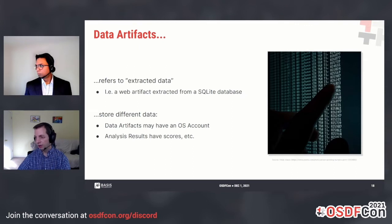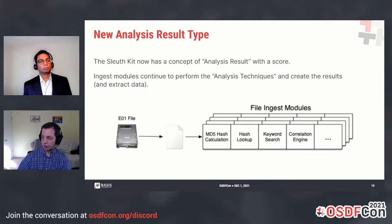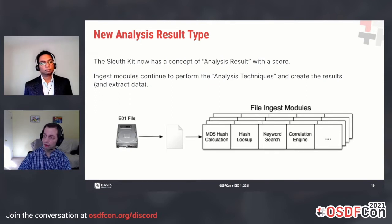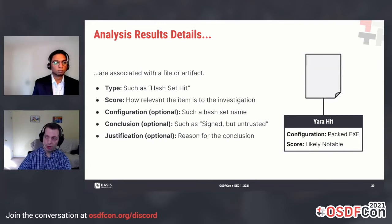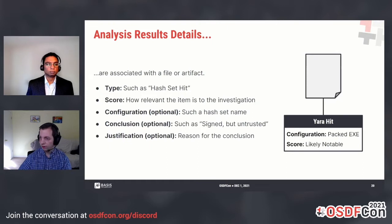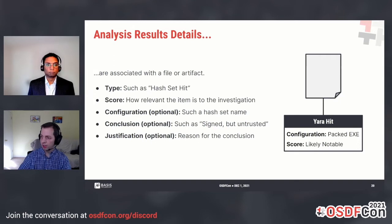Beyond the semantic differences, analysis results and data artifacts store different information. Data artifacts may have associated OS accounts, and analysis results have scores. This analysis result type has a score indicating its potential importance. Ingest modules continue to provide the analysis techniques to create analysis results as well as extracting data. Analysis results can be associated with files or data artifacts, and have a type like hash set hit or keyword hit.